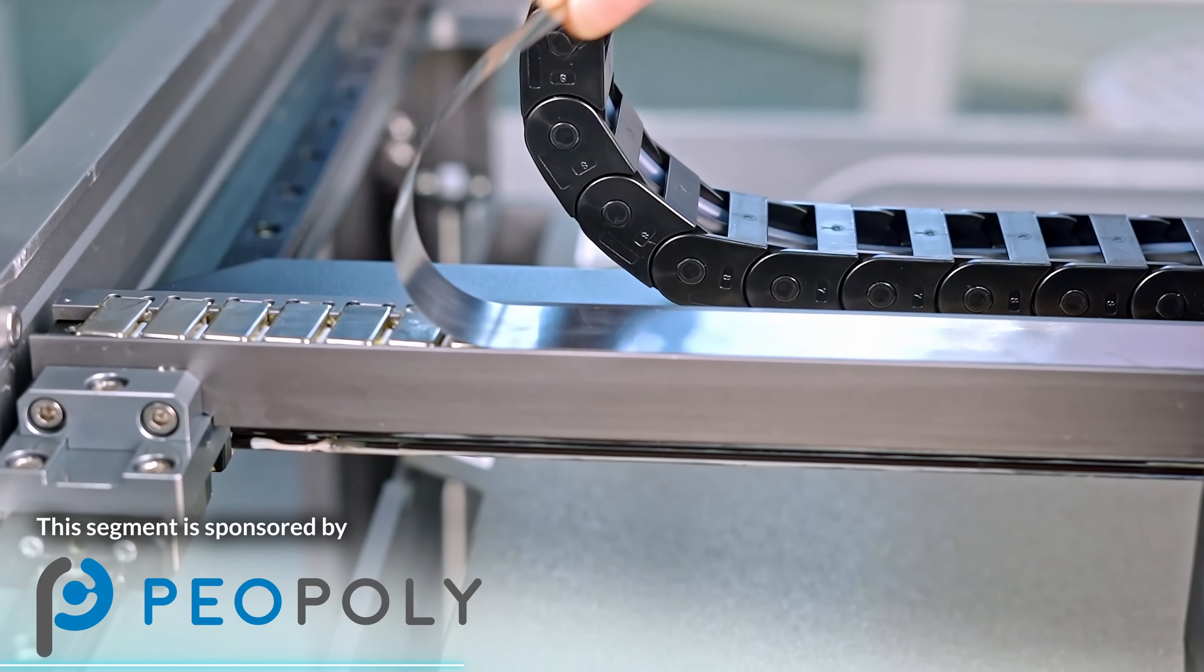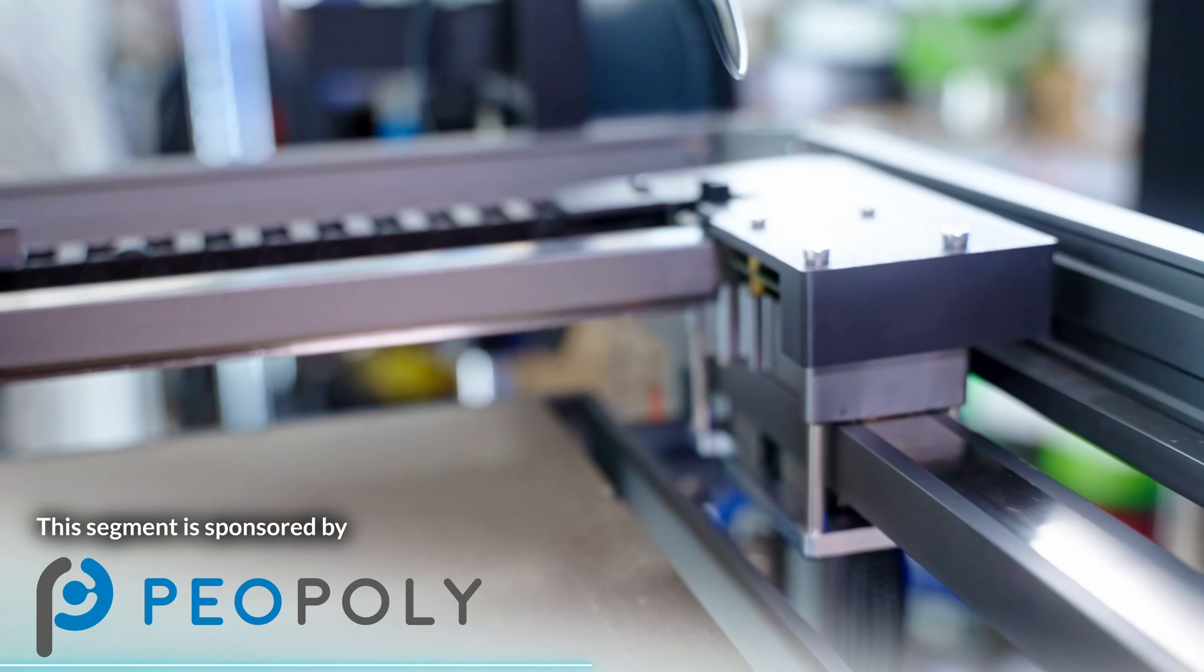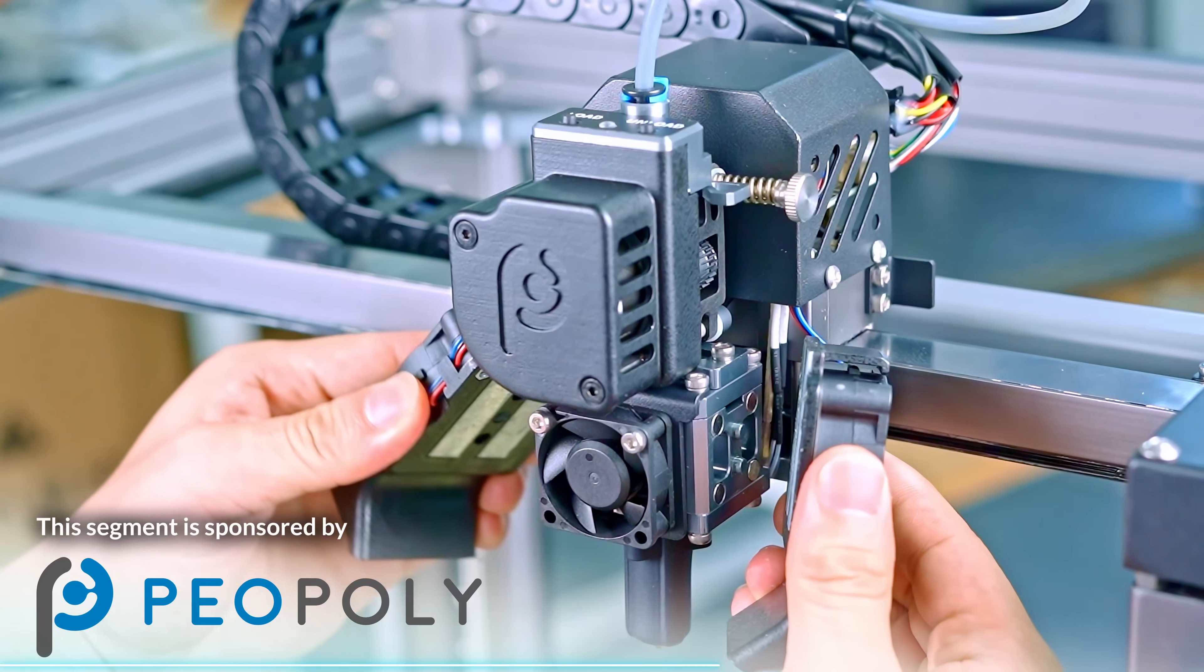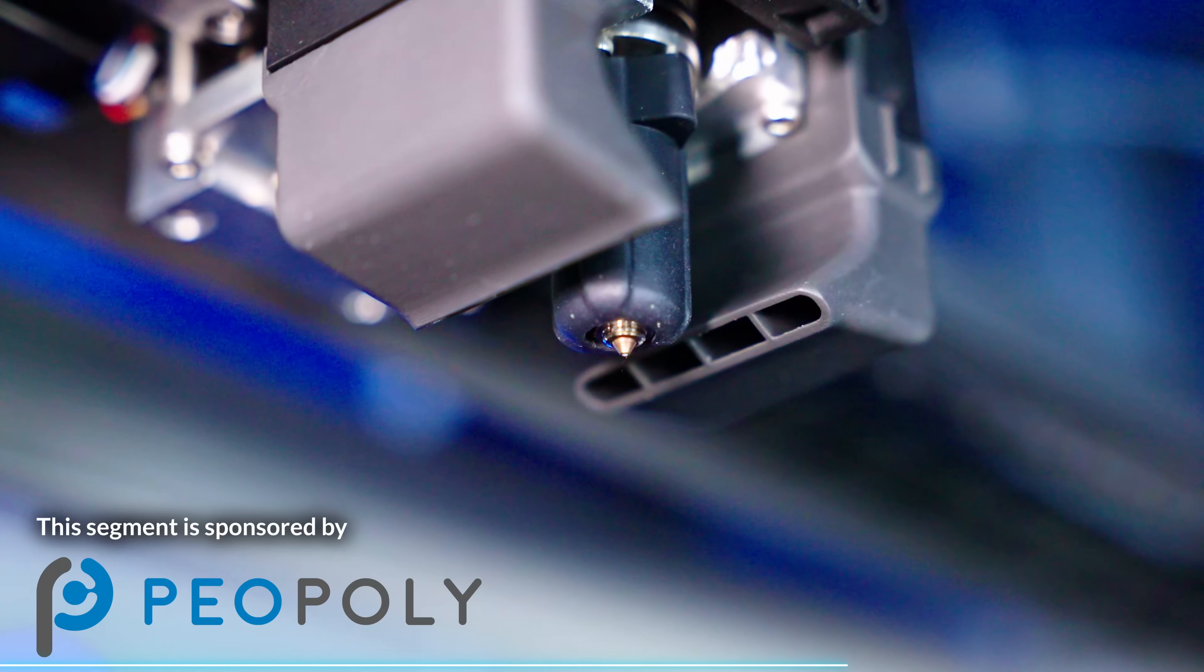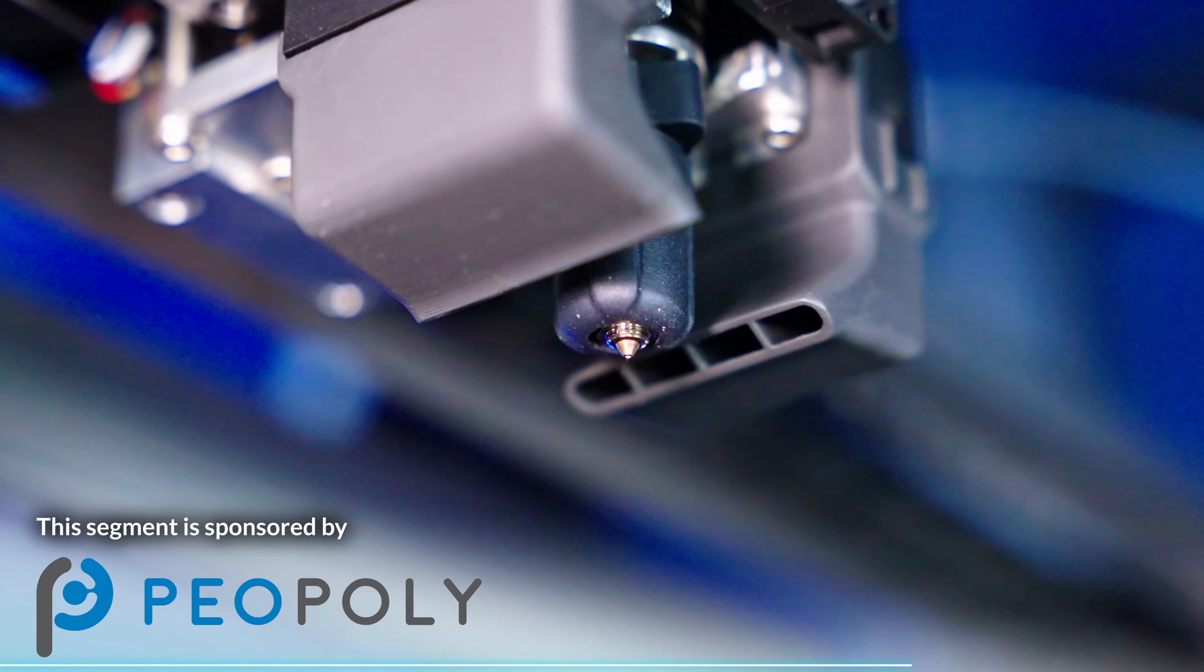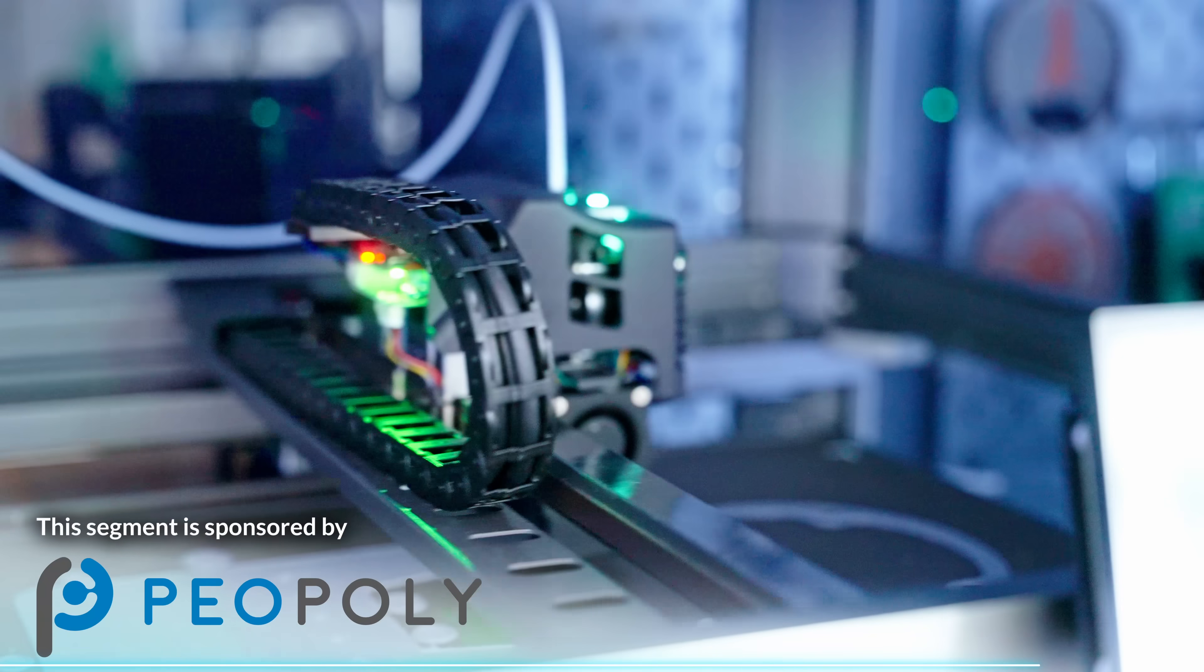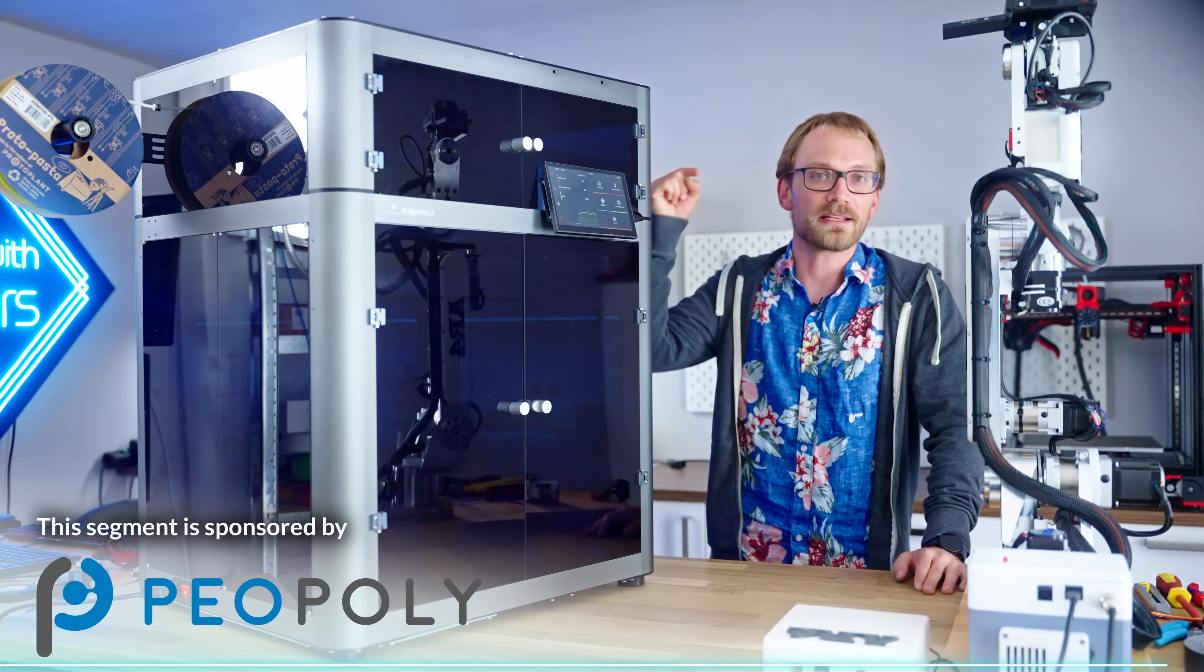To achieve its crazy printing speeds, the Magneto X skips belts and stepper motors and goes right to closed-loop linear brushless motors for X and Y, and comes stock with the Lancer extruder and a high-flow, wear-resistant hotend for up to 70mm³ of filament added to your print every second. The Magneto X runs standard, customizable Klipper firmware, and you can get it for four hundred dollars off all throughout July at the link below.